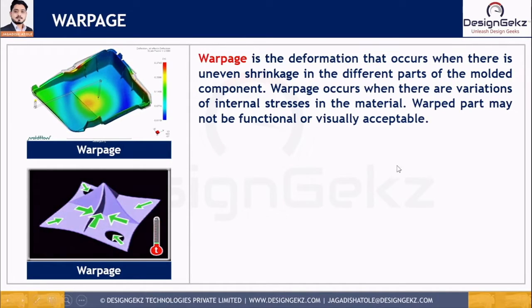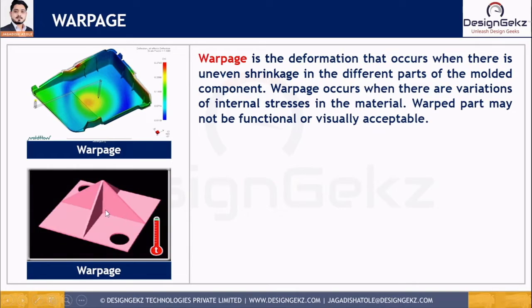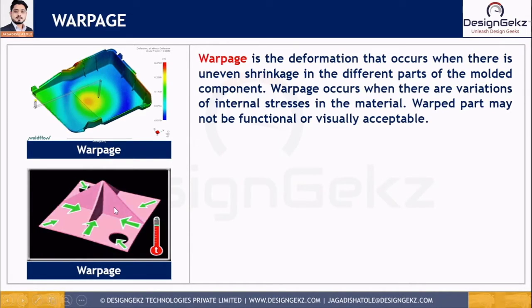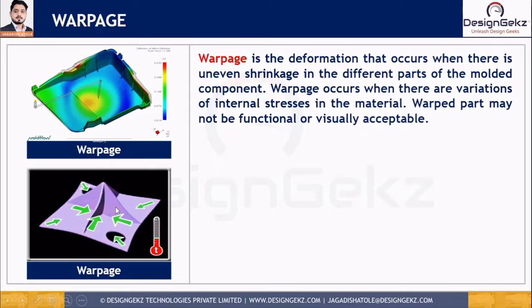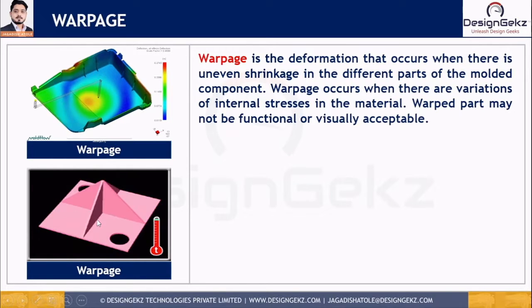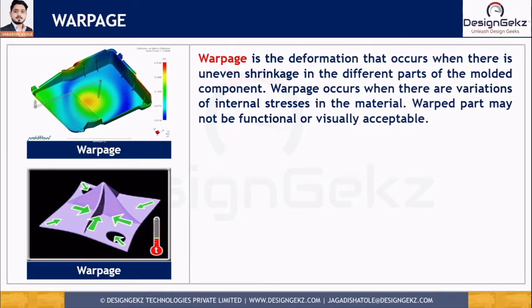For example, if this is the part which we designed and which may get installed in some application as an assembly component, but if this part gets warped like this, then it may not function properly and it may not be visually acceptable either.